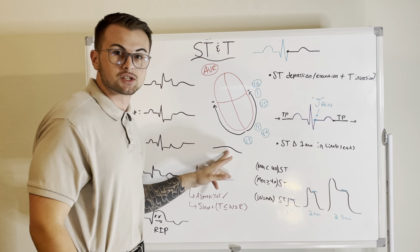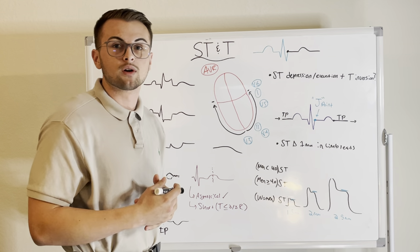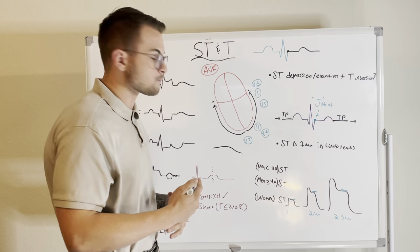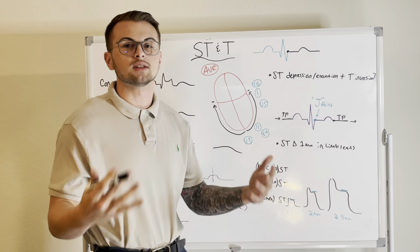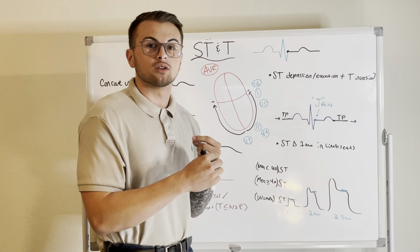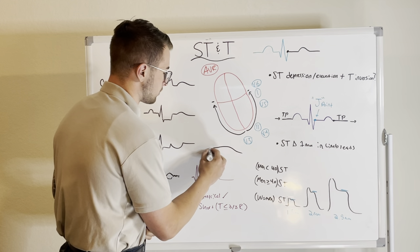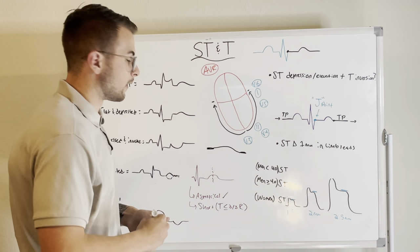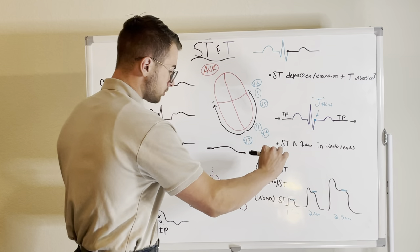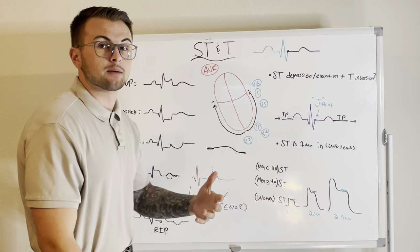Broad T waves can indicate hyperkalemia or a hemorrhagic stroke. Schools often teach only that tall tented T waves are a sign of hyperkalemia, but that's only true in the very early stages. If your patient has a sinusoidal rhythm with broad T waves that are hard to detect, this could also indicate hyperkalemia. The heart becomes paralyzed and eventually the EKG flattens to a flat line — so remember that broad T waves can indicate hyperkalemia or possibly a hemorrhagic stroke.